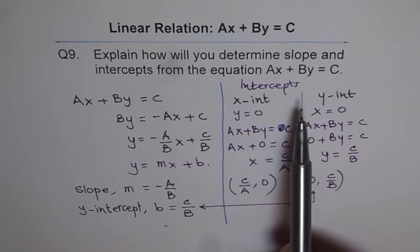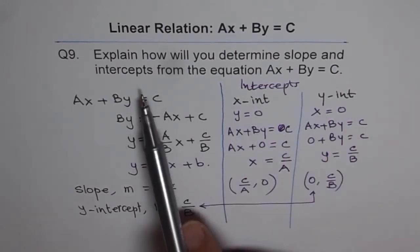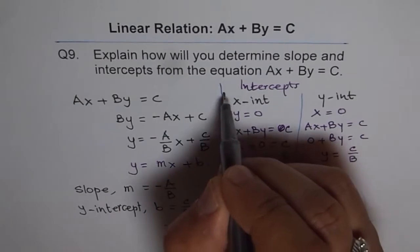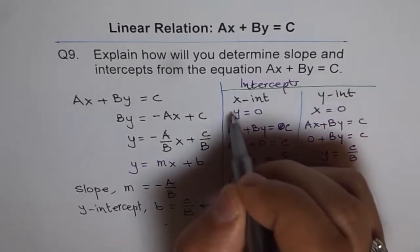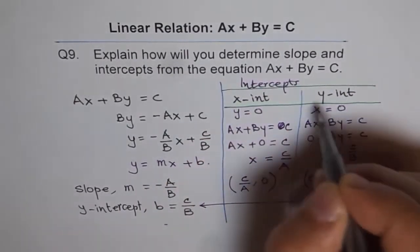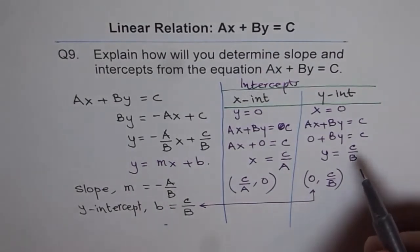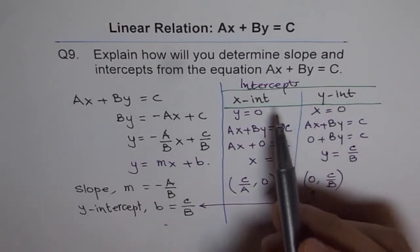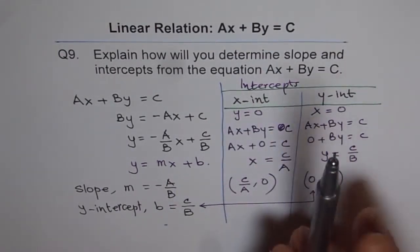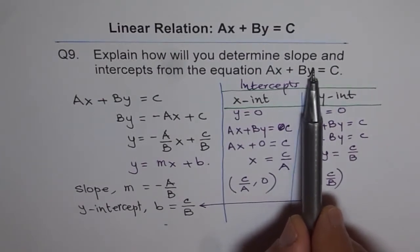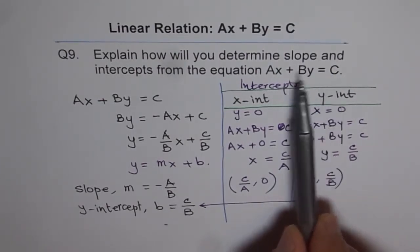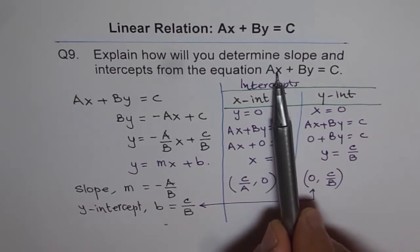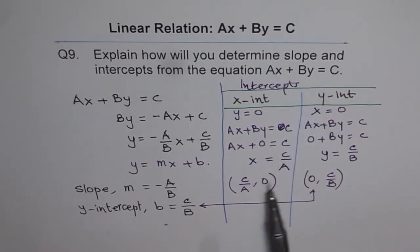The question here was to find slope and intercepts. When we say intercepts, we mean both X and Y-intercepts. So there are two intercepts, X and Y-intercepts. To find X-intercept, you have to put Y equals 0. When you hide this term, you get C equals to AX, X equals to C divided by A.